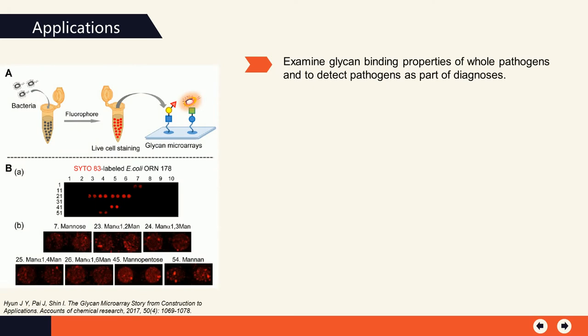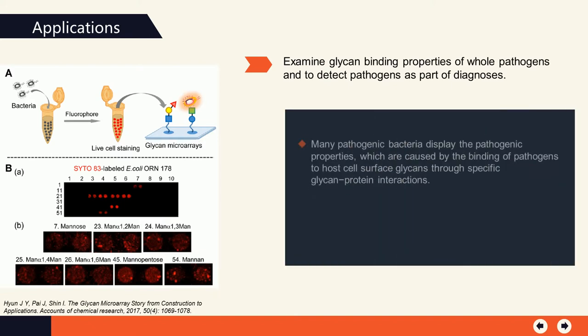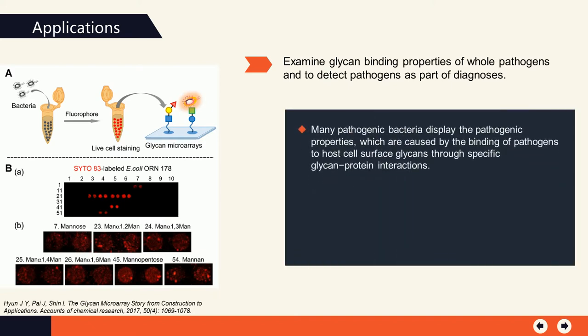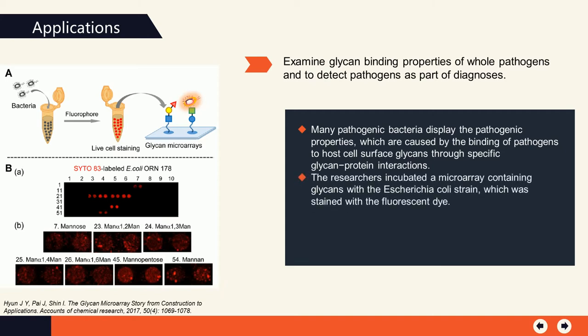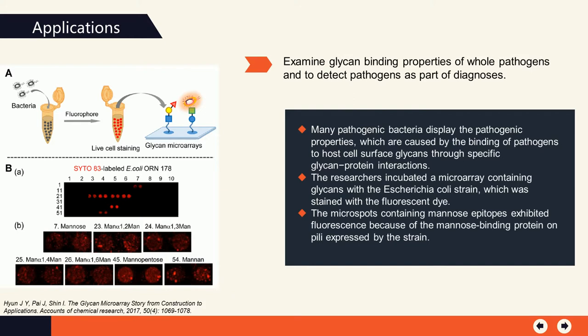In addition, glycan microarrays can be used to examine glycan-binding properties of whole pathogens and to detect pathogens as part of diagnoses. Many pathogenic bacteria display pathogenic properties caused by the binding of pathogens to host cell surface glycans through specific glycan-protein interactions. The researchers incubated a microarray containing glycans with a bacteria strain stained with fluorescent dye. The micro-spots containing mannose epitopes exhibited fluorescence because of the mannose-binding protein on PILI expressed by the strain. In order to make this approach widespread, experimental conditions employed for this purpose should be optimized.